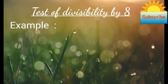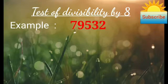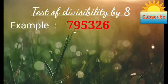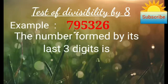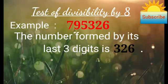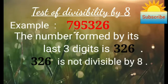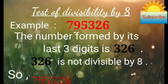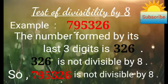Consider another number 795,326. The number formed by its last three digits is 326. Since 326 is not divisible by 8, 795,326 is not divisible by 8.